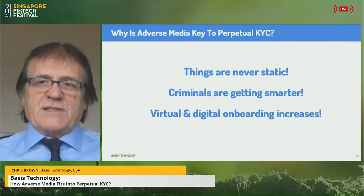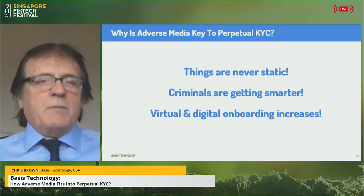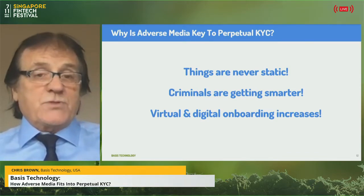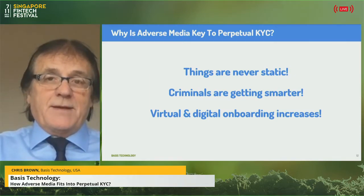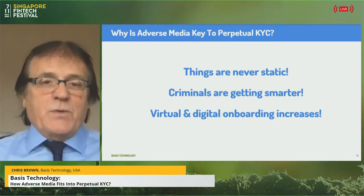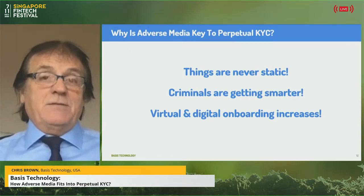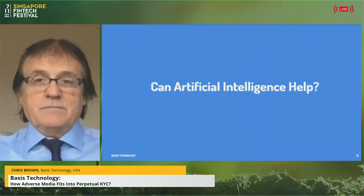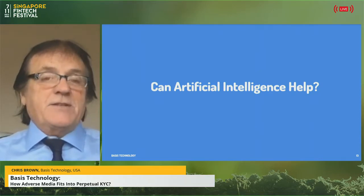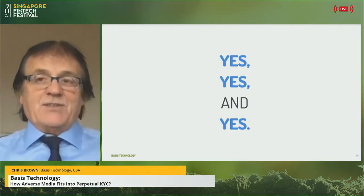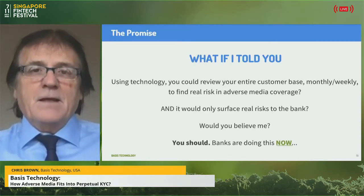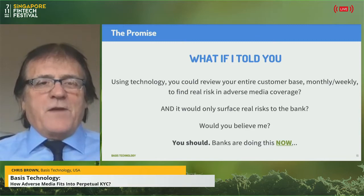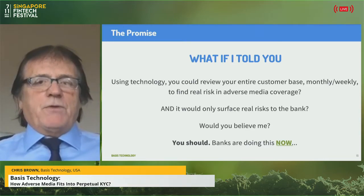So why is adverse media key to perpetual KYC? Things are not static — they constantly move. Criminals are getting smarter; if they find out they're on a watch list, they could use someone else who isn't. Hence why someone who was low risk previously may not be low risk now. And we're now in a world of COVID with virtual and digital onboarding, which becomes an even greater risk to work through. Can artificial intelligence help? Yes, yes, and yes.